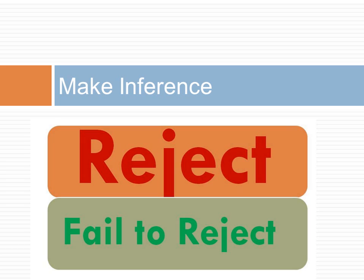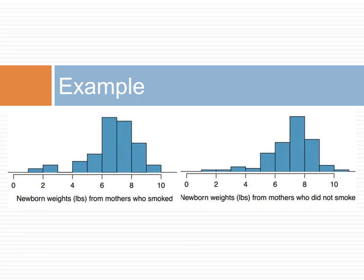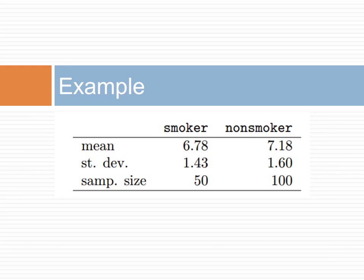The last step in our framework is to infer from the sample if the population has the hypothesized null value. Let us look at an example. The left histogram shows weight of infants for mothers who smoked. The right shows it for mothers who did not smoke. The question is whether there is a difference between the mean of the two populations. Both distributions exhibit strong skew.